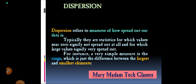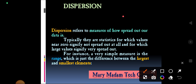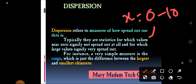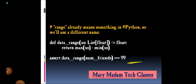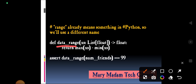A very simple measure of dispersion is the range. For example, given a data set x, the range could be 0 to 10, where the lowest value is 0 and the highest is 10. The range is the difference between the largest and smallest elements in the data set.